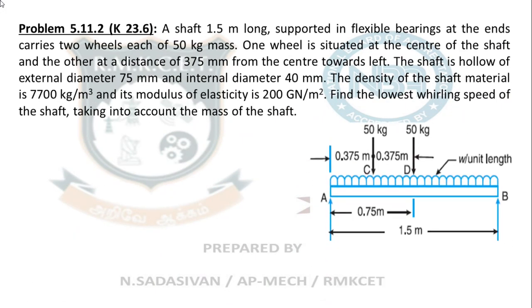Read this question along with the figure. A shaft 1.5 meter long, supported in flexible bearings. Whenever you see the word 'flexible bearings,' it means your beam is a simply supported beam. Otherwise, if you see the word 'long bearing,' it means your beam is a fixed beam.